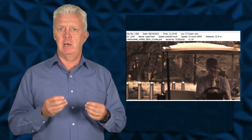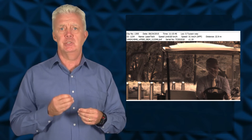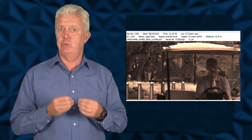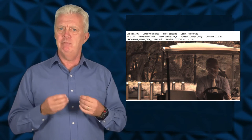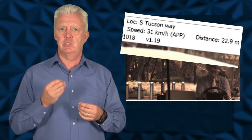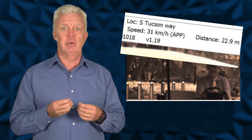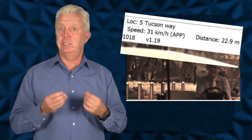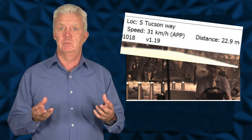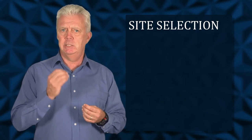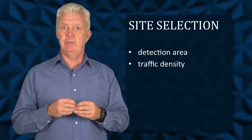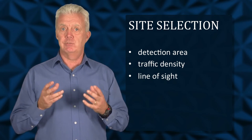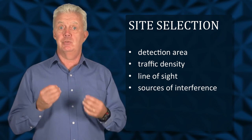When deploying the LIDAR, the police must always consider various factors to ensure the results are consistent and valid. The main factor to consider is the site selection, as this has the greatest influence on the operating characteristics of the device. Factors that must be taken into consideration when selecting a site include detection area, traffic density, line of sight, and sources of interference.